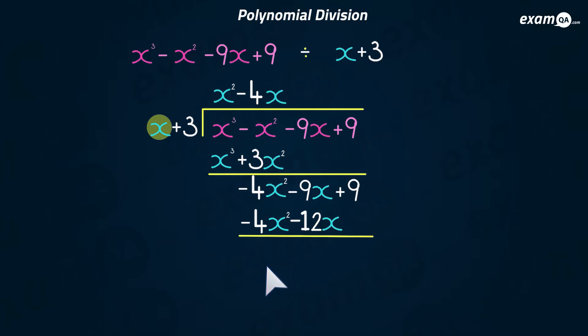Minus four x squared subtracted by another minus four x squared is nothing. Then we have minus nine x subtract minus twelve x, which turns into minus nine x plus twelve x, which is three x. And nine subtract nothing is nine. Then we do it all over again.